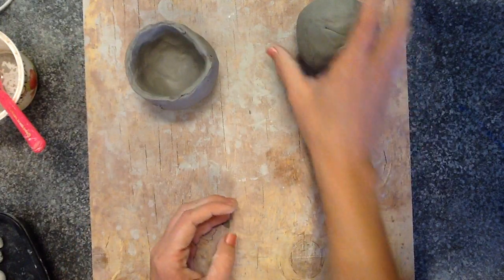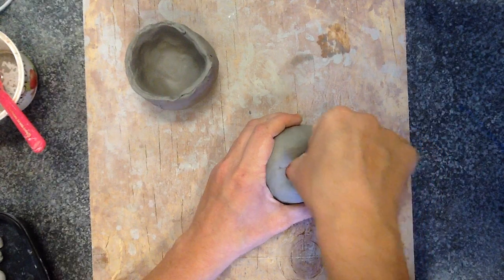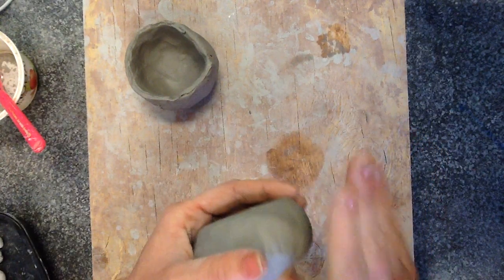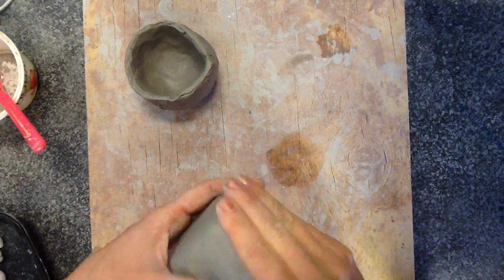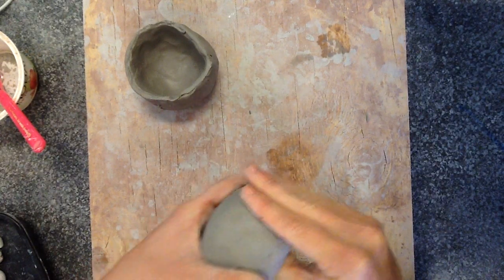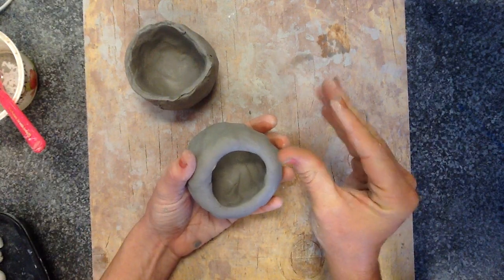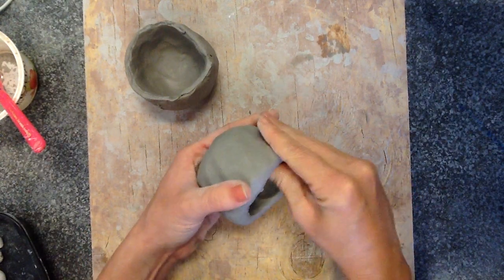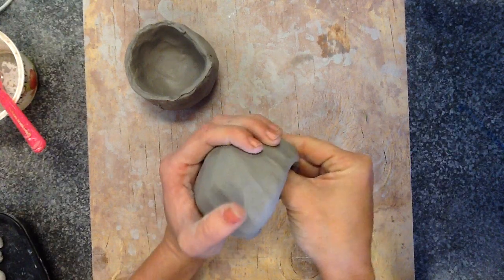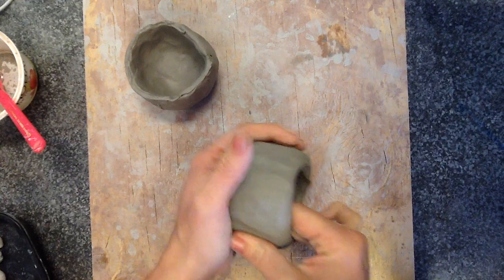I have one done. Now, I do another one. Push your thumb in. Pinch with four fingers. Slowly going around in a circle. You're going to have to go around a few times because you're not pinching it all the way the first time. You're just pinching it a little bit each time. And eventually, it will form into a wonderful little pinch pot.